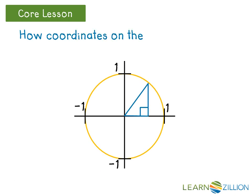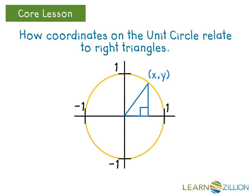If the point where the triangle touches the circle is known as (x, y), then the x-axis portion of the triangle has a value of x, the vertical portion of the triangle has a value of y, and the hypotenuse is the one unit radius.